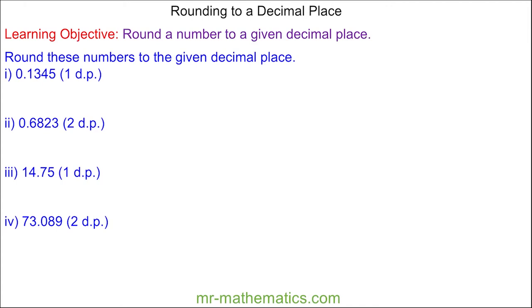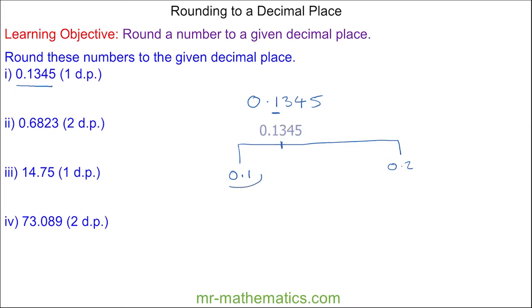Welcome to our lesson on rounding to a decimal place. We're going to begin with 0.1345. You can see the first number after the decimal point is the one, so this is between 0.1 and 0.2. Because it is nearer to 0.1 than it is to 0.2, 0.1345 is approximately 0.1 to one decimal place.